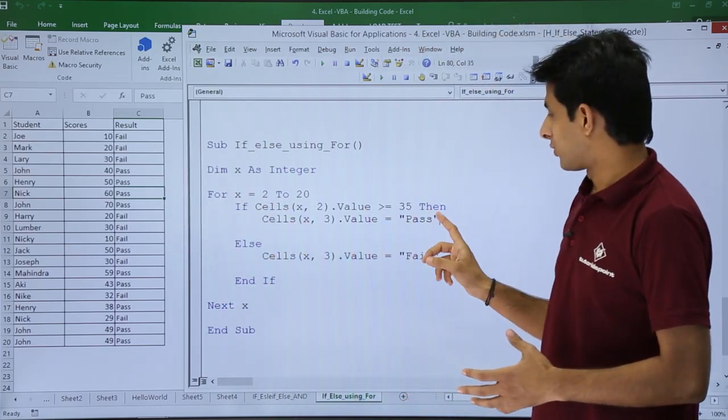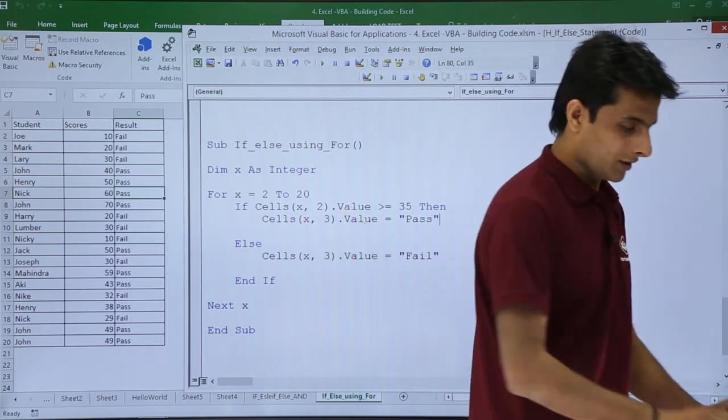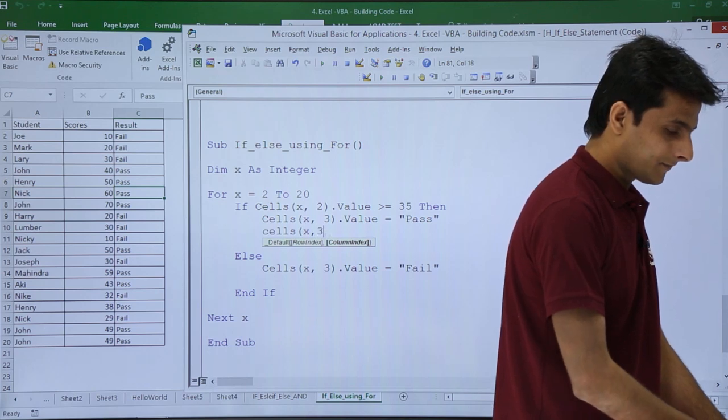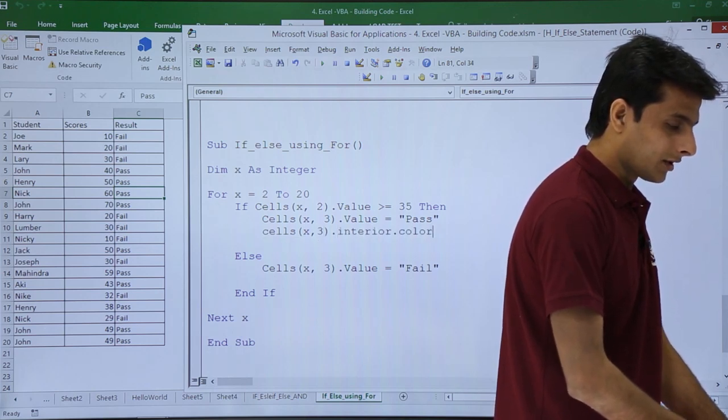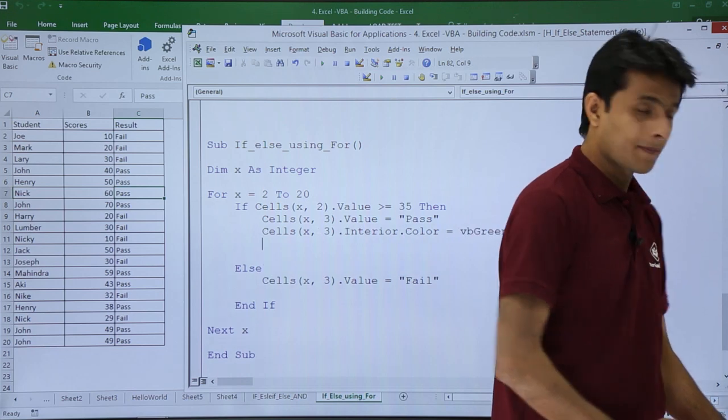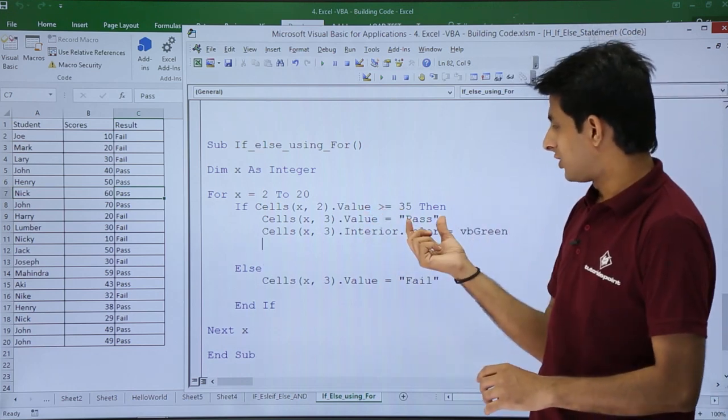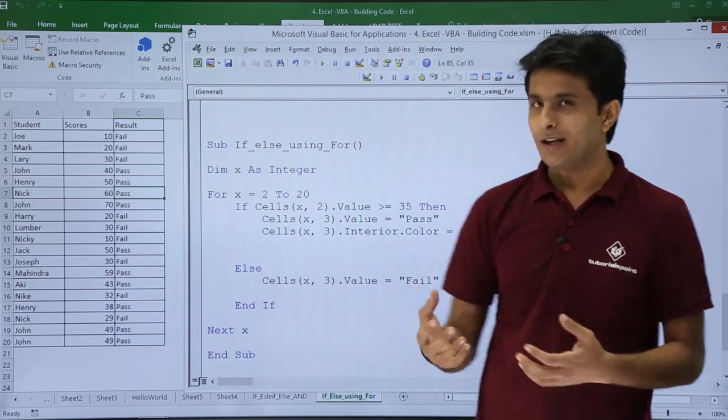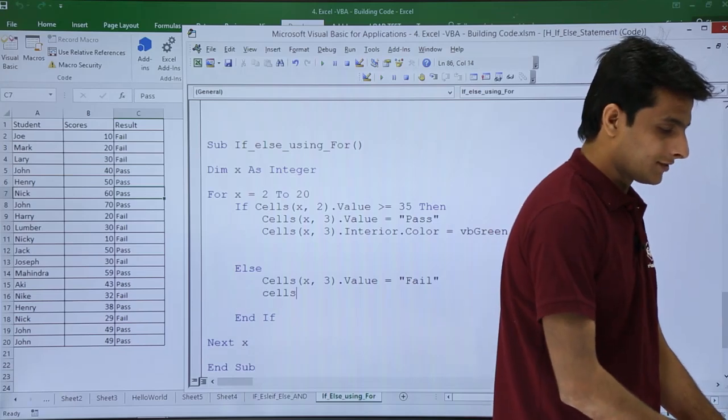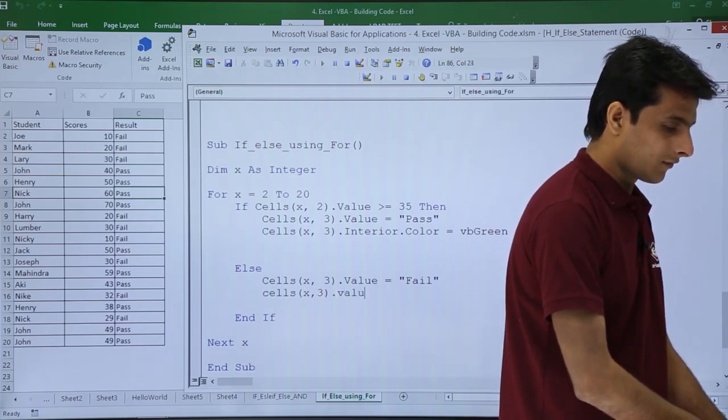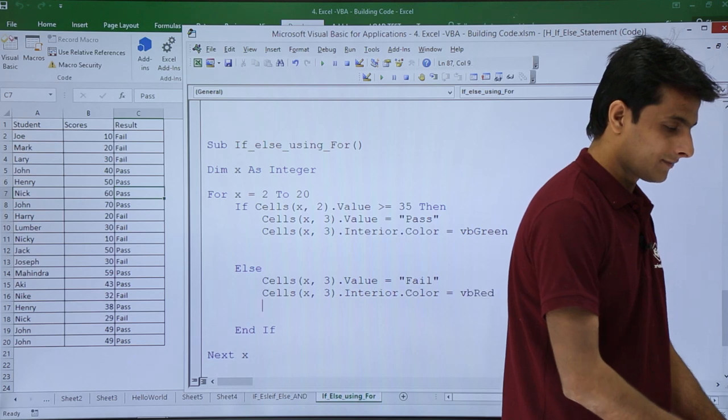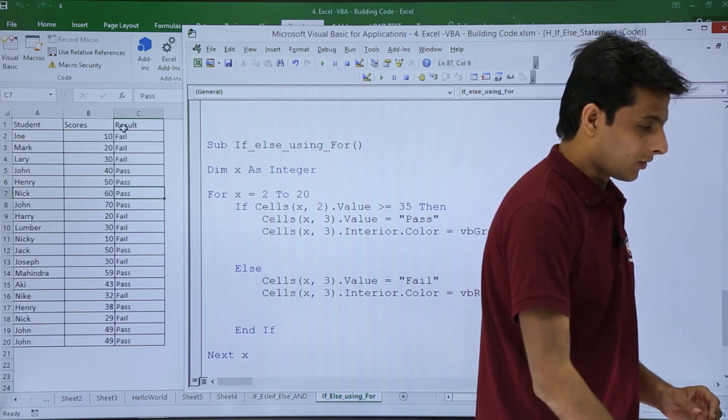In the pass condition, I'll put a color here: cells(x,3).interior.color equal to vbGreen. If the person is passed, I want to give the background color as vbGreen. If the person is fail, I want to give as red color - cells(x,3).interior.color equal to vbRed. That's it.